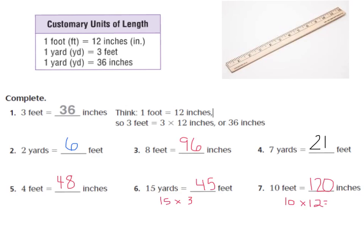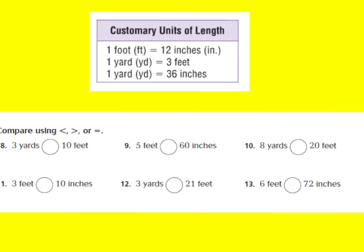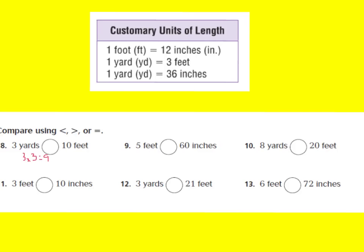Now let's go to number 8. For this set of questions, you're going to be using the inequalities of less than, greater than, or equal to. Number 8: 3 yards — is it less than, greater than, or equal to 10 feet? Let's convert to feet: if 1 yard equals 3 feet, then 3 yards equals 9 feet, because 3 times 3 equals 9. Therefore, since 9 is not greater than 10, I would have to say it's less than.